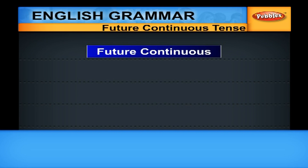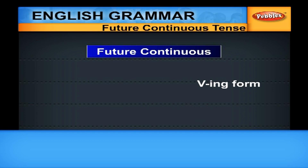Future continuous — we use future continuous to refer to an action that will be in progress at some point of time in the future. In future continuous, you have to use the V-ing form of the verb.